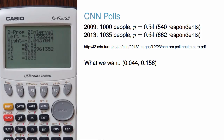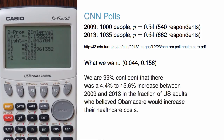Finally, we should always put our confidence interval in context. We are 99% confident that there was a 4.4% to 15.6% increase between 2009 and 2013 in the fraction of US adults who believed Obamacare would increase their healthcare costs.